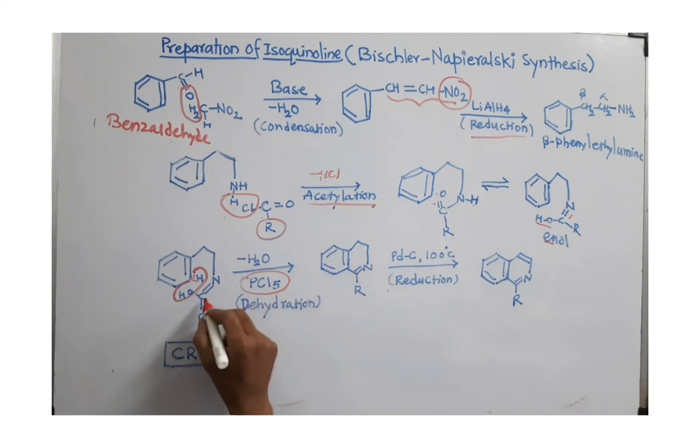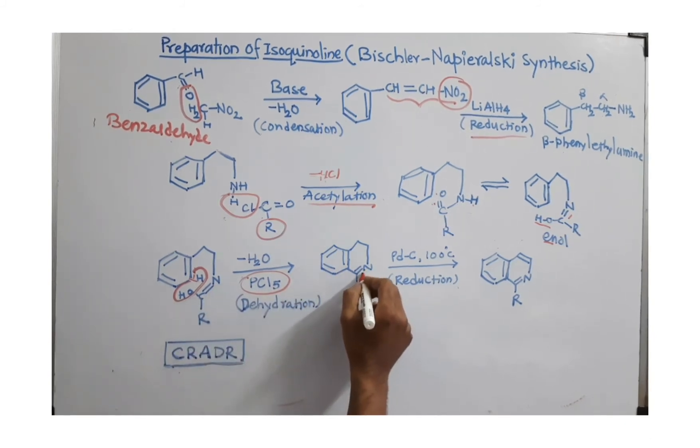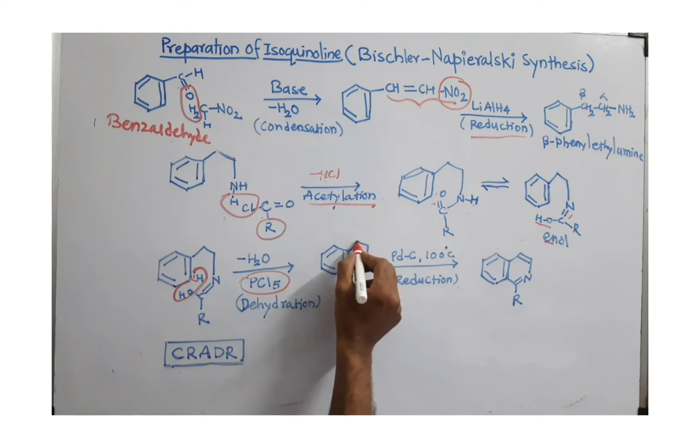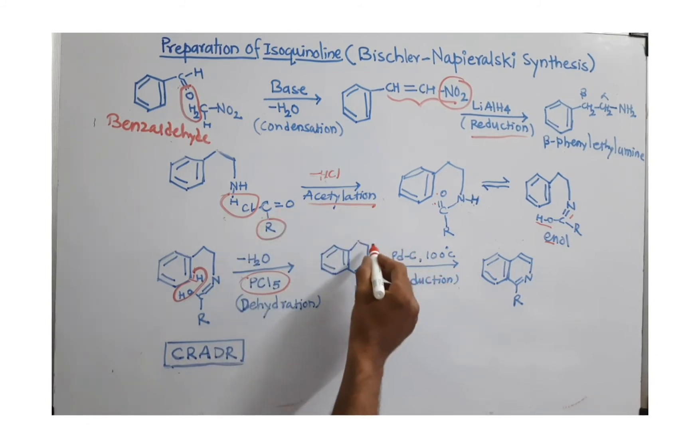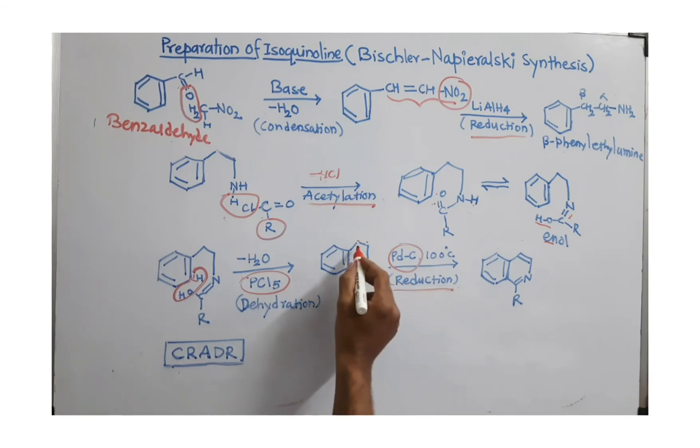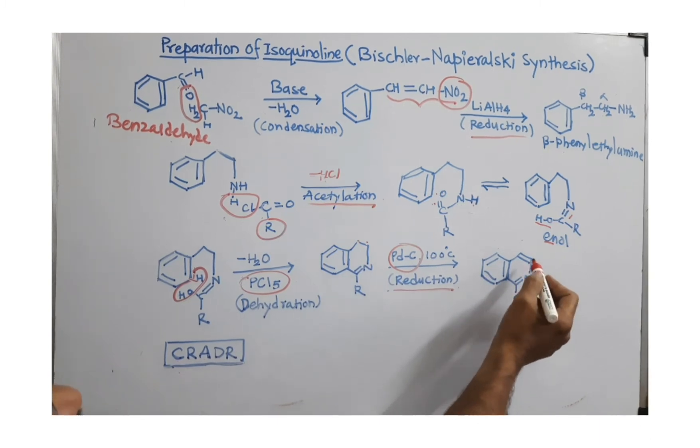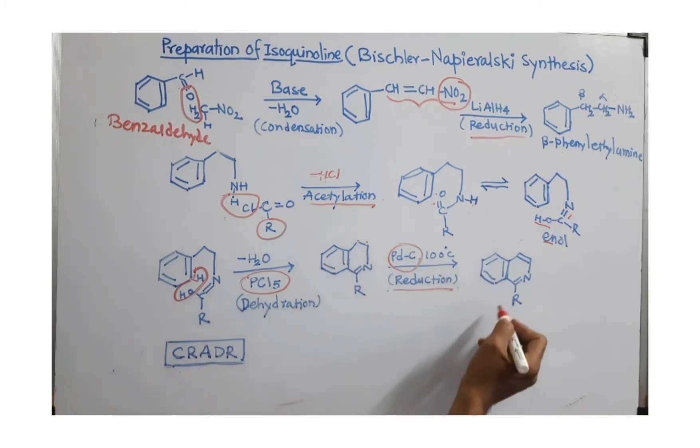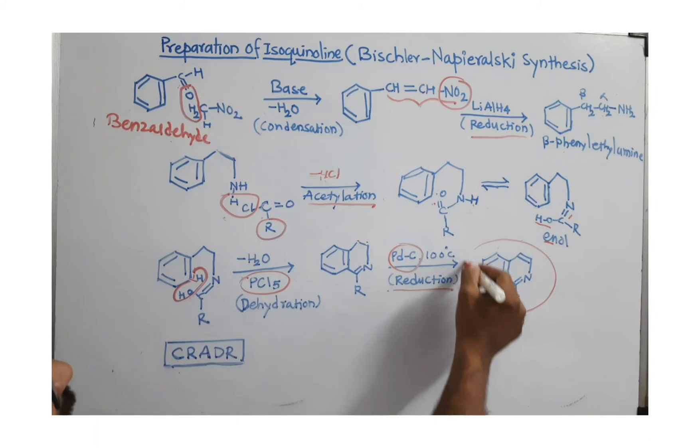Now, double bond in between this carbon and nitrogen, it is already there. And we want double bond between these two carbons. So, we have to remove one hydrogen from this carbon and one hydrogen from this carbon. And that can be done by using reduction. So, this reaction is using Pd/C, palladium and carbon. So, to remove hydrogen from this, this is dehydrogenation. So, you can produce double bond here.